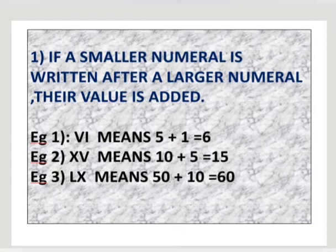XV, here V is smaller, X is bigger. X is 10, so 10 plus 5 is 15. LX, X is smaller again, so 50 plus 10 is 60. A smaller numeral is written after that means it is addition.